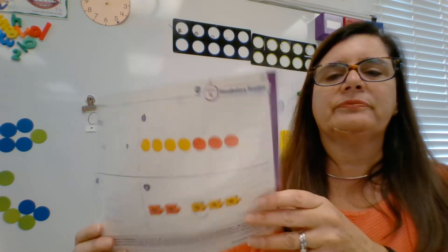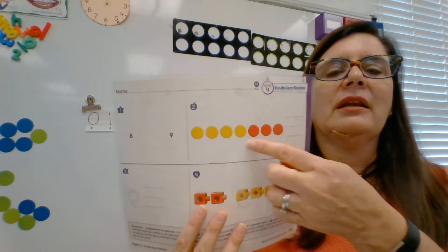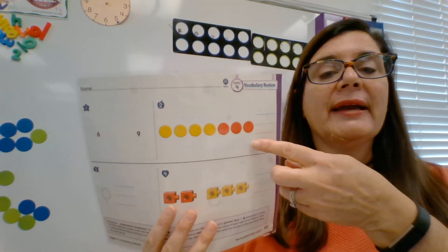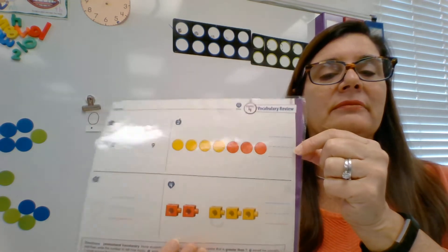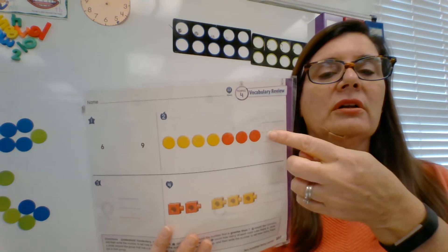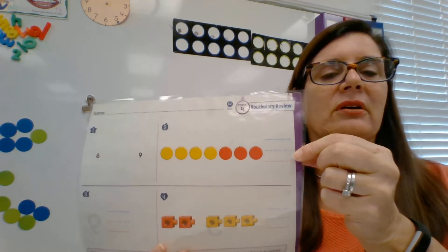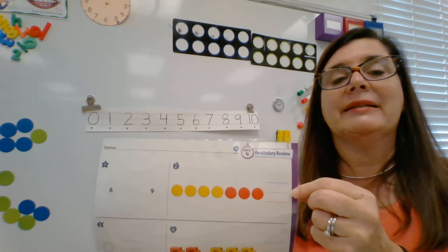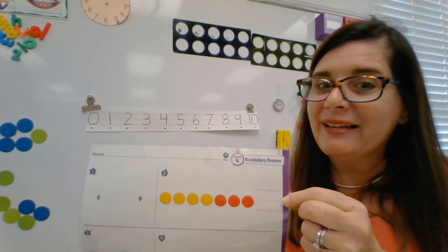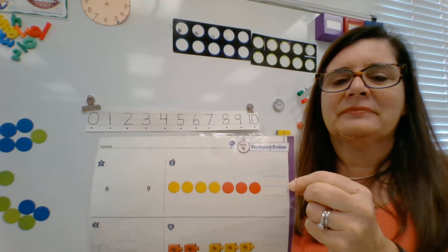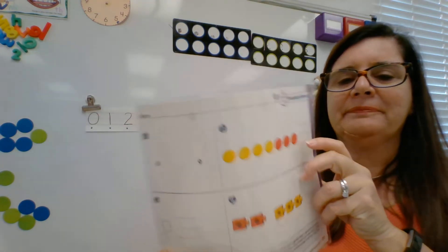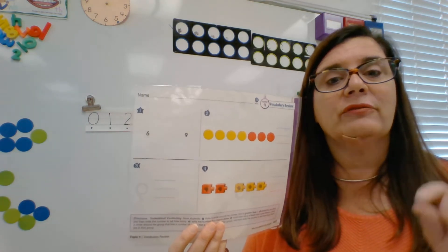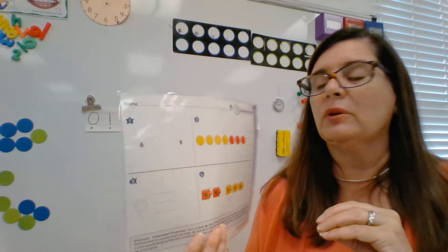Let's go on to number 2. You're going to see some yellow and red counters. The directions are to count all the counters and write how many. Count all of them together and write how many counters there are. Take your time, go ahead and do that — write the number on the lines very neatly. Remember, if I go too fast, just hit pause, finish writing, then hit play again to follow along with me.